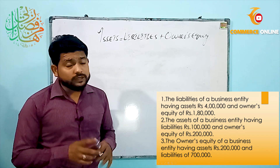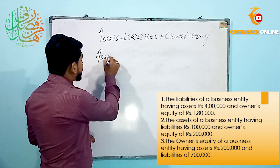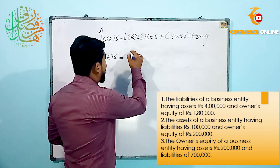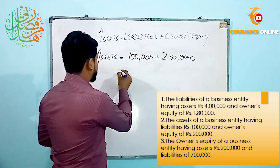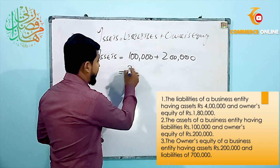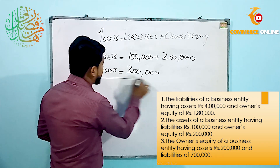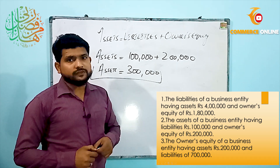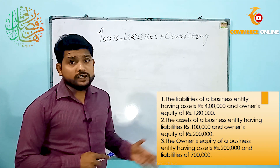اس سوال میں equation لکھی ہوئی ہے۔ In this question, liability is one lakh and owner's equity ہمارے پاس two lakh rupees ہے۔ ان کو add کر دیں گے تو three lakh، اور یہ ہمارے assets ہیں۔ بہت ہی آسان — once again. (Liability is one lakh, owner's equity is two lakh, add them to get three lakh as assets. Very easy.)